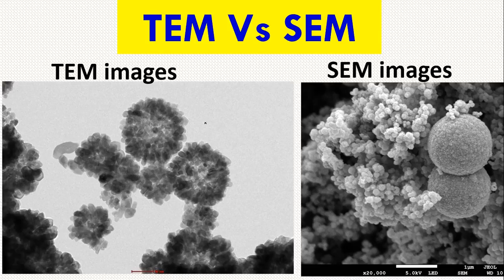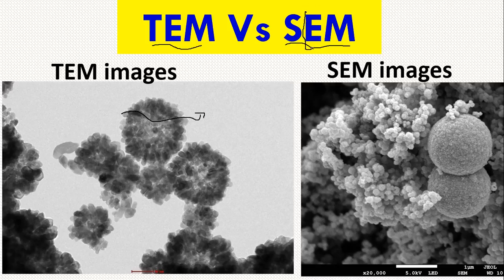In this video, let's compare these two characterization tools or techniques. The first one is transmission electron microscope, and this is called scanning electron microscope. From the names, transmission means something is transmitted — it passes through. In both cases, we use electrons to examine something — in TEM we use electrons and in SEM we use electrons.